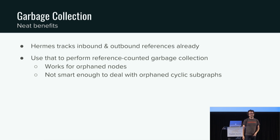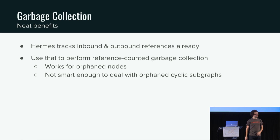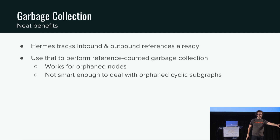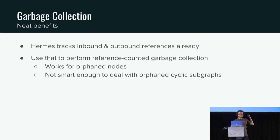Another really neat benefit of all the bookkeeping Hermes is doing is that we can implement garbage collection pretty much out of the box. Hermes does automatic reference-counted garbage collection — it's basic, but it's good enough in most cases. Any time you run a query and then run a different query and some data has been orphaned, Hermes will just get rid of it for you. This is really important for a mobile application where you don't have much memory available. It's not smart enough to deal with cyclic subgraphs and other edge cases, so it's not perfect, but it's good enough.